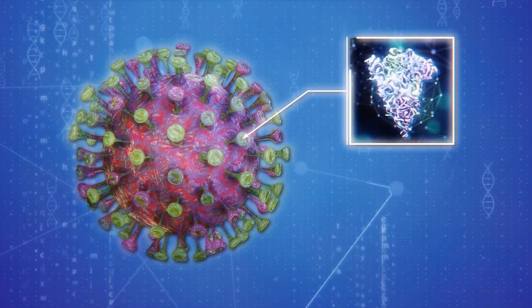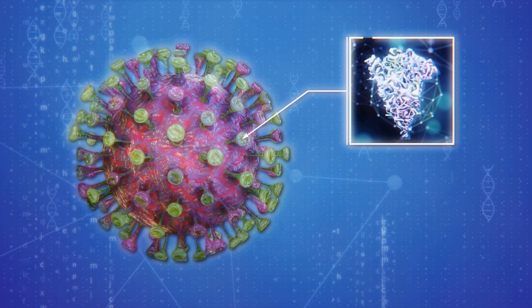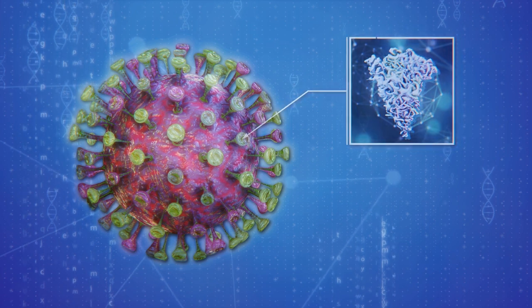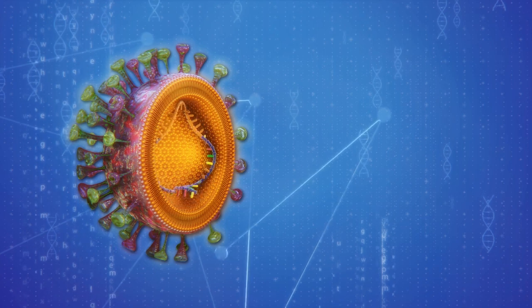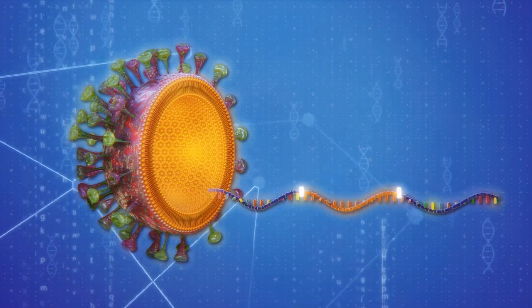The spike protein possesses receptor-binding domains, or RBDs, that the virus uses to pry open receptors before penetrating the cellular membrane. The AstraZeneca-Oxford vaccine carries a gene with the code for the spike protein that the coronavirus uses to enter a human cell.